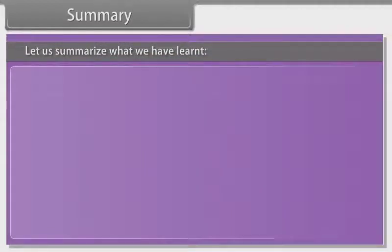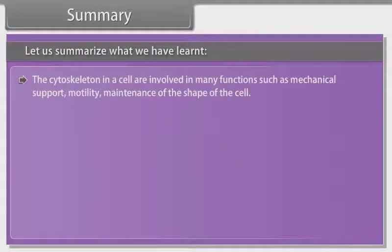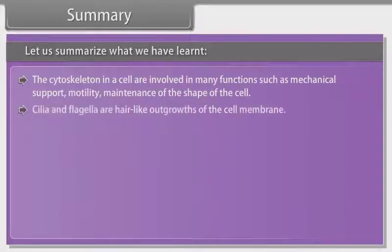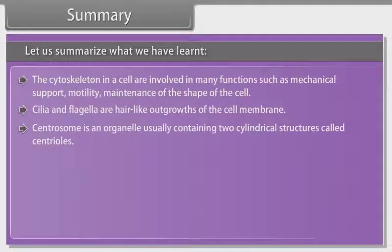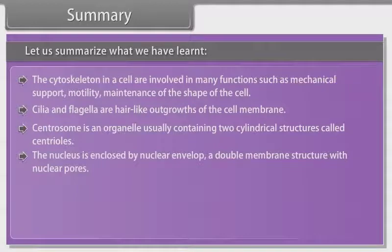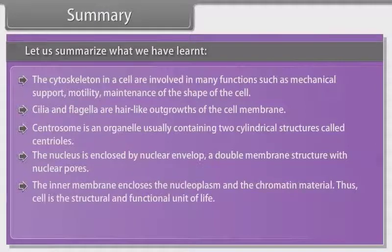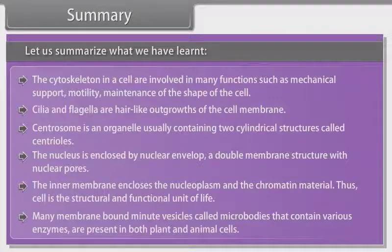Summary. Let us summarize what we have learnt. The cytoskeleton in a cell is involved in many functions such as mechanical support, motility, and maintenance of the shape of the cell. Cilia and flagella are hair-like outgrowths of the cell membrane. Centrosome is an organelle usually containing two cylindrical structures called centrioles. The nucleus is enclosed by a nuclear envelope, a double membrane structure with nuclear pores. The inner membrane encloses the nucleoplasm and the chromatin material. Many membrane-bound minute vesicles called microbodies that contain various enzymes are present in both plant and animal cells.